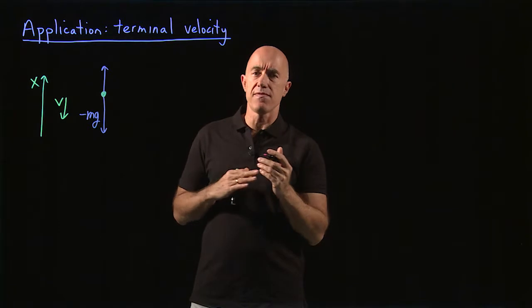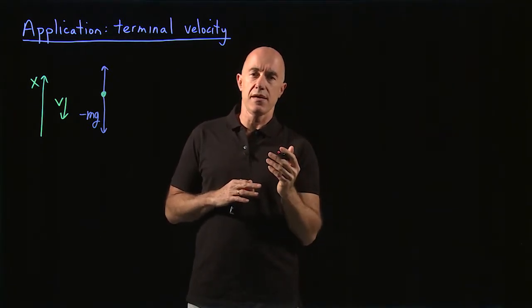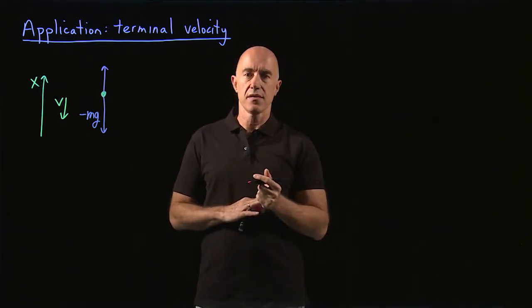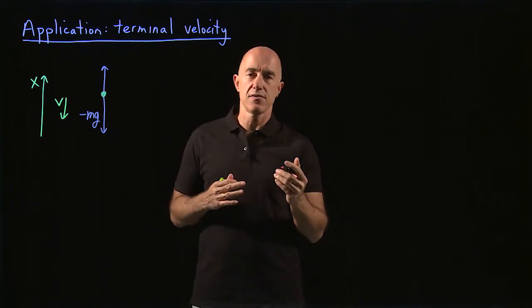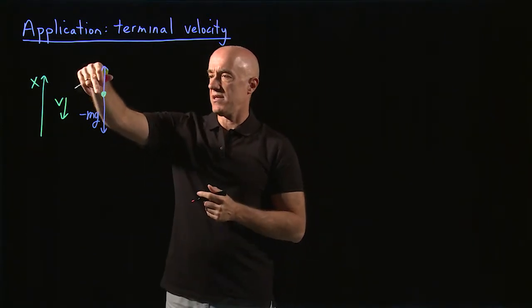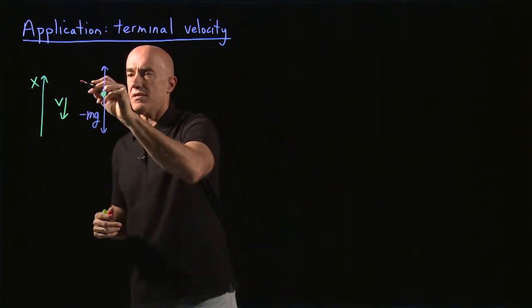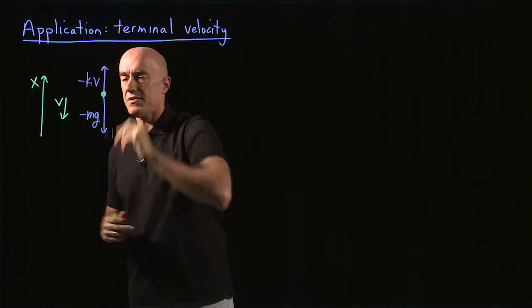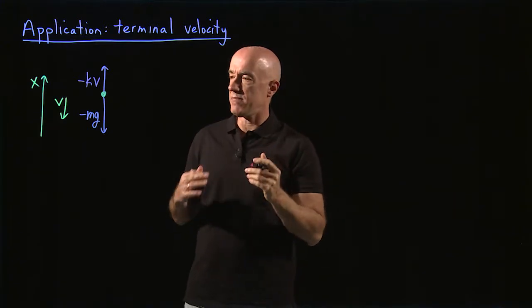Typically in this type of problem, you assume that the air resistance force is proportional to the velocity. So it's a constant times the velocity. You would always like that constant to be positive. So here the velocity v is negative, but the force is going to be up. So the force here we can take to be minus a constant, positive constant times v. So minus kv is positive, minus mg is negative.